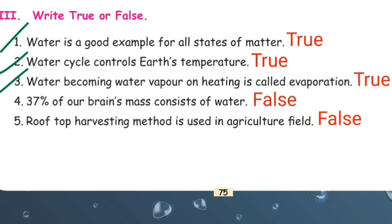Question 3: water becoming water vapor on heating is called evaporation. Answer: True. Evaporation means heating water until it becomes vapor. Question 4: rooftop harvesting method is used in agriculture field. Answer: False.